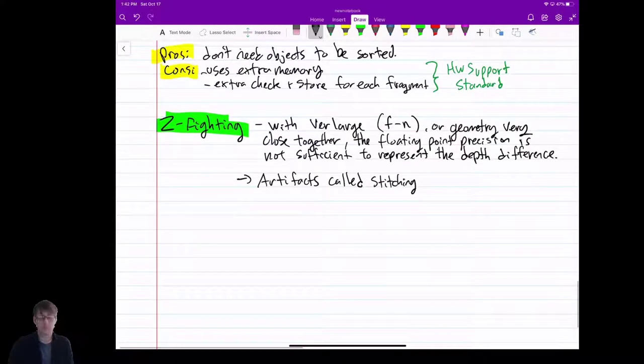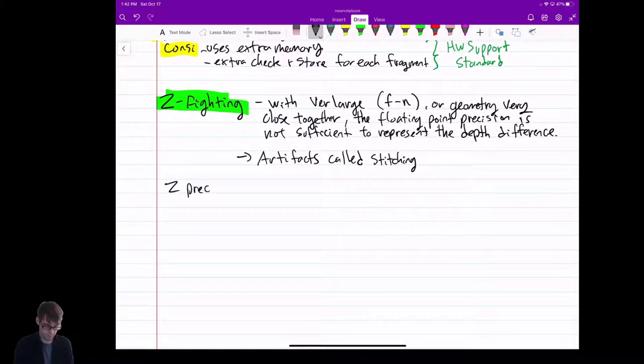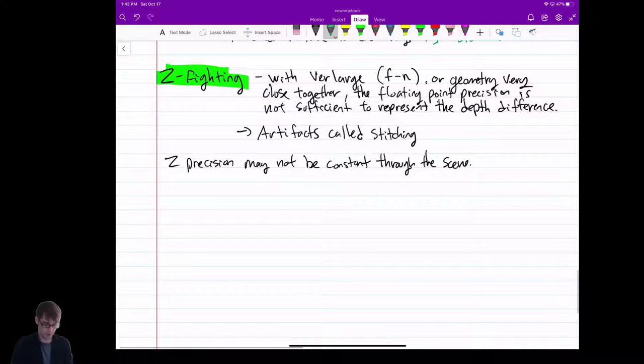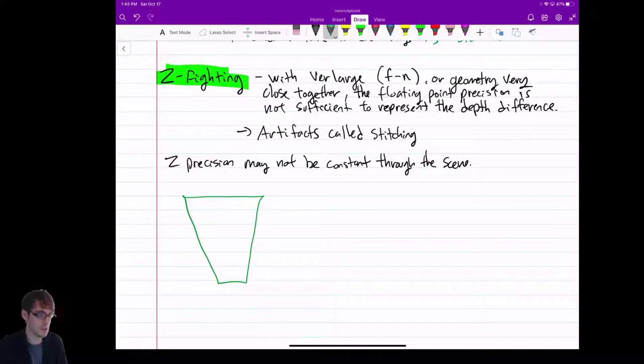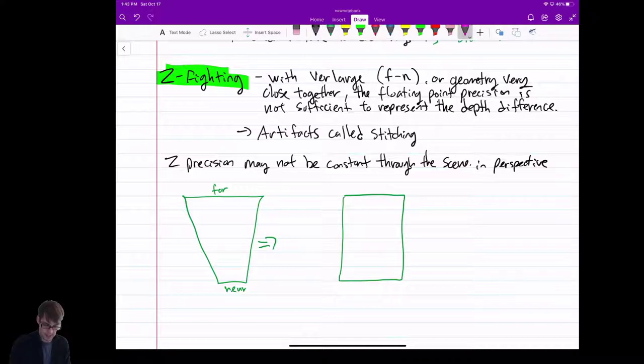But another part of this problem I want to talk about, which is also really not obvious, is that your z-precision, you can't count on it being linear. Your z-precision may not be consistent or constant through the scene. And what I mean by that is, so I have my view frustum. This is only a problem when you're in perspective, I should say. In perspective. So I have my view frustum. I have my far. I have my near. That's great. And it goes through these transformations to give you this kind of flattened right cube. And the way that it does that is it divides by z. We know that. We learned that.